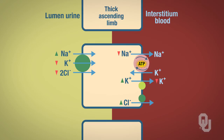We also have chloride ions using facilitated diffusion. Chloride ions are going from a high concentration to a low concentration of chloride — so this is also a type of facilitated diffusion across the basolateral membrane.